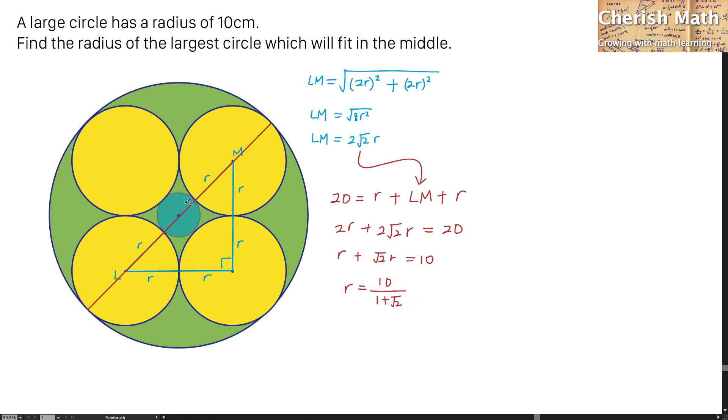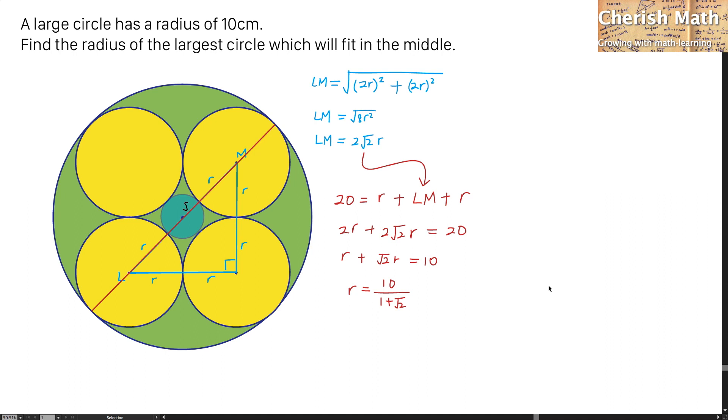Let me label S as the radius of the blue circle, which is the smallest one. Now, I'm going to solve the question by using the radius of 10cm for the large circle. And that is the same as by using S plus R plus R.